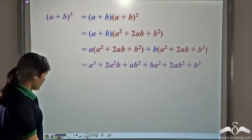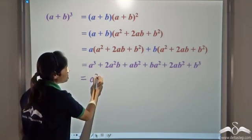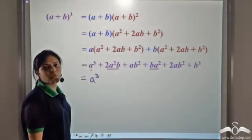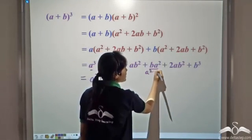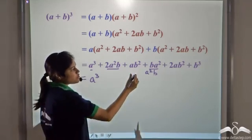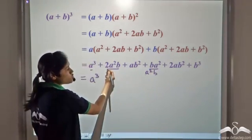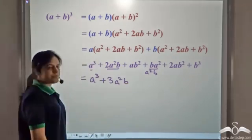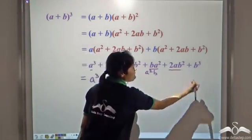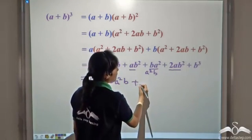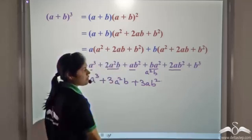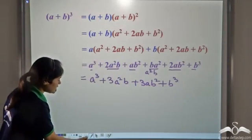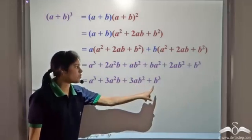Now let us collect like terms. We have a³. Then 2a²b plus ba² — since multiplication is commutative, ba² is the same as a²b — so 2a²b + a²b gives 3a²b. Then ab² + 2ab² gives 3ab². And we have the b³ term.